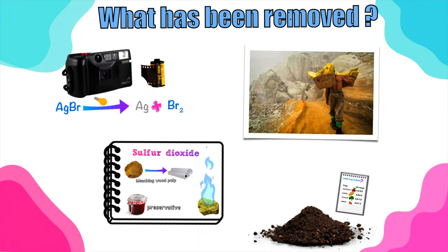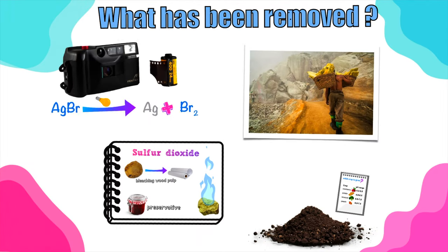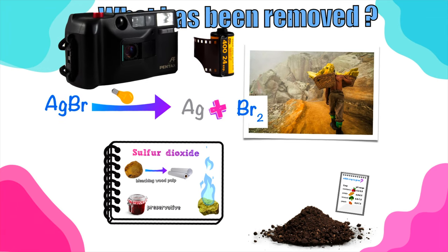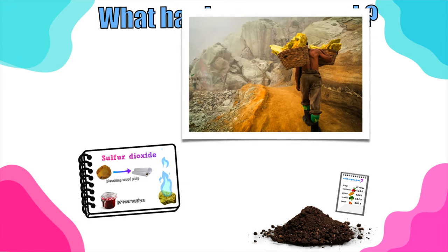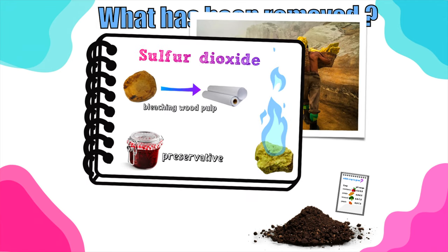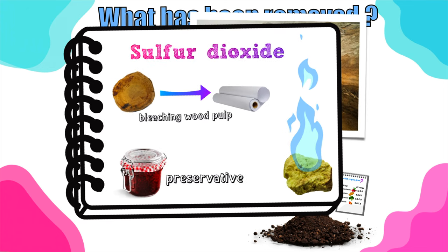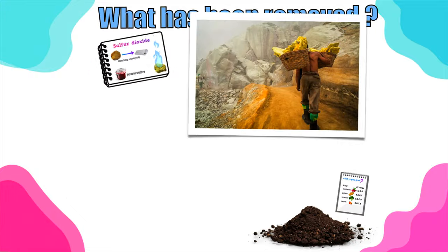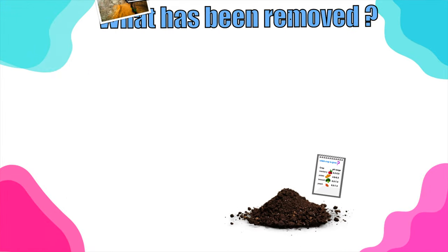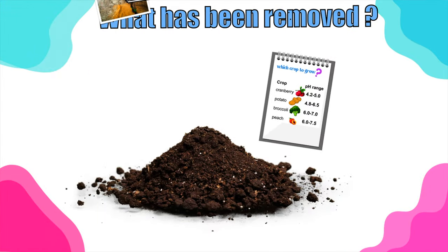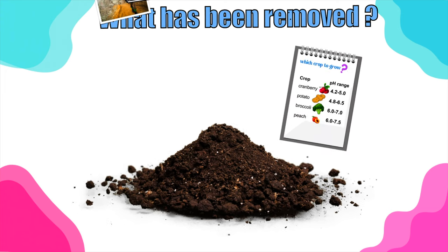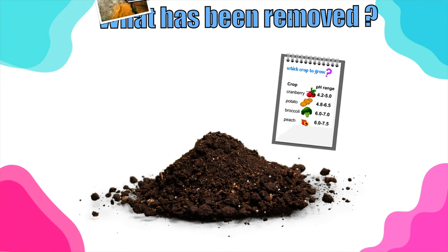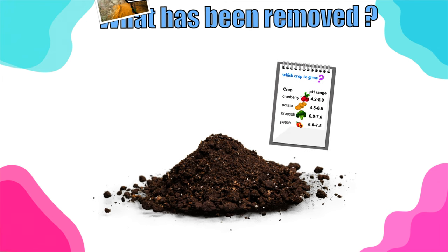There are other smaller parts of the syllabus that have been cancelled. They've cancelled the part about photography and photochemical reactions, the sources of sulfur, and the uses of sulfur dioxide — so you no longer need to know about bleaching of wood pulp or sulfur dioxide as a preservative. They've also cancelled the part about testing soil acidity, which used to appear in papers 4 and 6 for checking soil acidity to grow different crops.